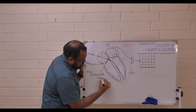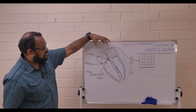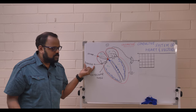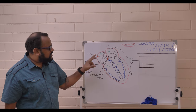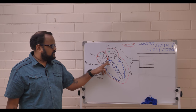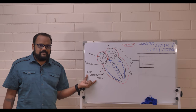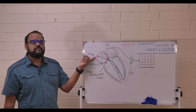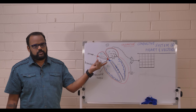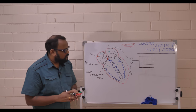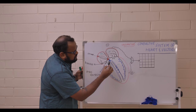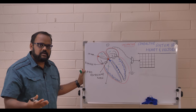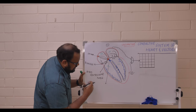We call it the AV node. Impulses from the right and left atrium hit the fibrous annulus, which cannot conduct, so the only pathway conducting impulses from the atrium to the ventricle is the AV node. The AV node is also a specialized cardiac myocyte capable of producing impulses on its own when the SA node fails — if the SA node fails, the AV node takes over.